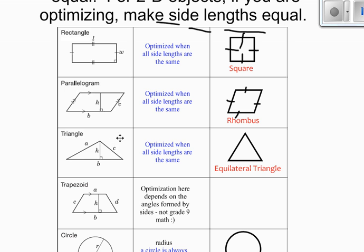For a triangle, again, it's optimized when the side lengths are the same. And if you have the side lengths the same on a triangle, it's something called an equilateral triangle. So you'll notice a nice thing is that it's kind of one rule. Side lengths need to be the same.